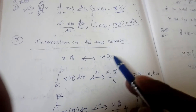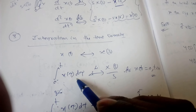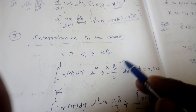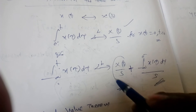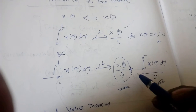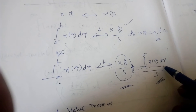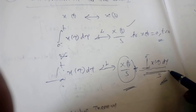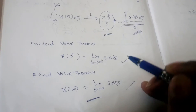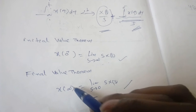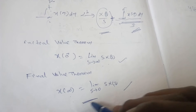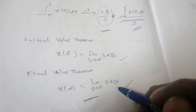Similarly, for integration in the time domain: the integral from 0 to t of x(τ)dτ gives X(s)/s. But if the limits are from minus infinity to t, we get X(s)/s plus the integral from minus infinity to 0⁻ divided by s. The initial value theorem: x(0⁺) equals the limit as s→∞ of s·X(s). The final value theorem: x(∞) equals the limit as s→0 of s·X(s).